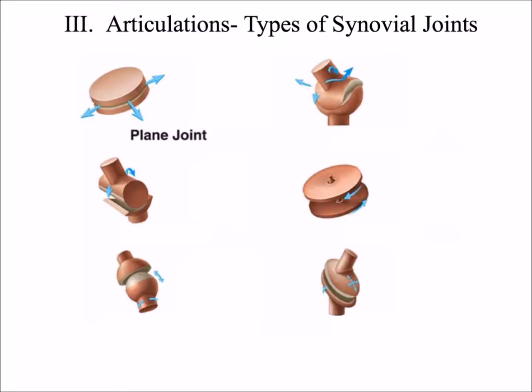The second type of synovial joint is the saddle joint, which is rare. It is found between the first metacarpal — the bone making up the palm of the thumb — and the trapezium, the carpal or wrist bone that sits beneath it.